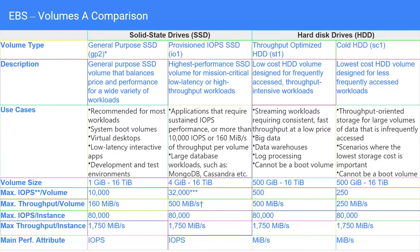The most common EBS volume is the general purpose one, also called GP2 — General Purpose version 2. It is SSD-based and good for a variety of workloads where you don't have a specific criteria to select from. Then you have provisioned IOPS, which is the highest performance SSD volume. It is used for mission critical, low latency, and high throughput workloads.